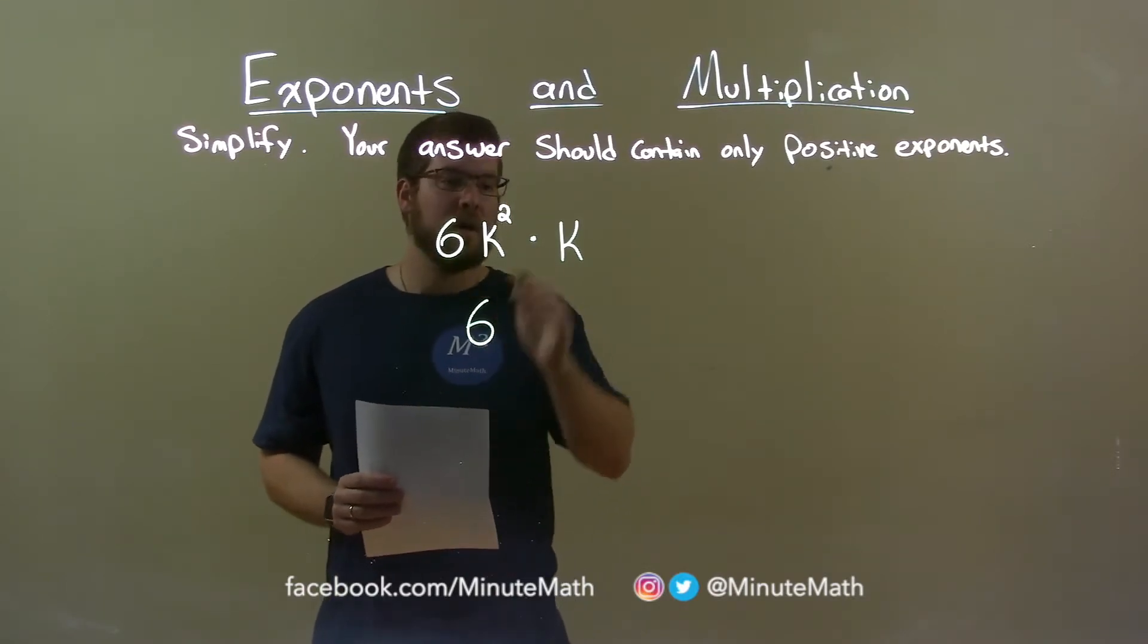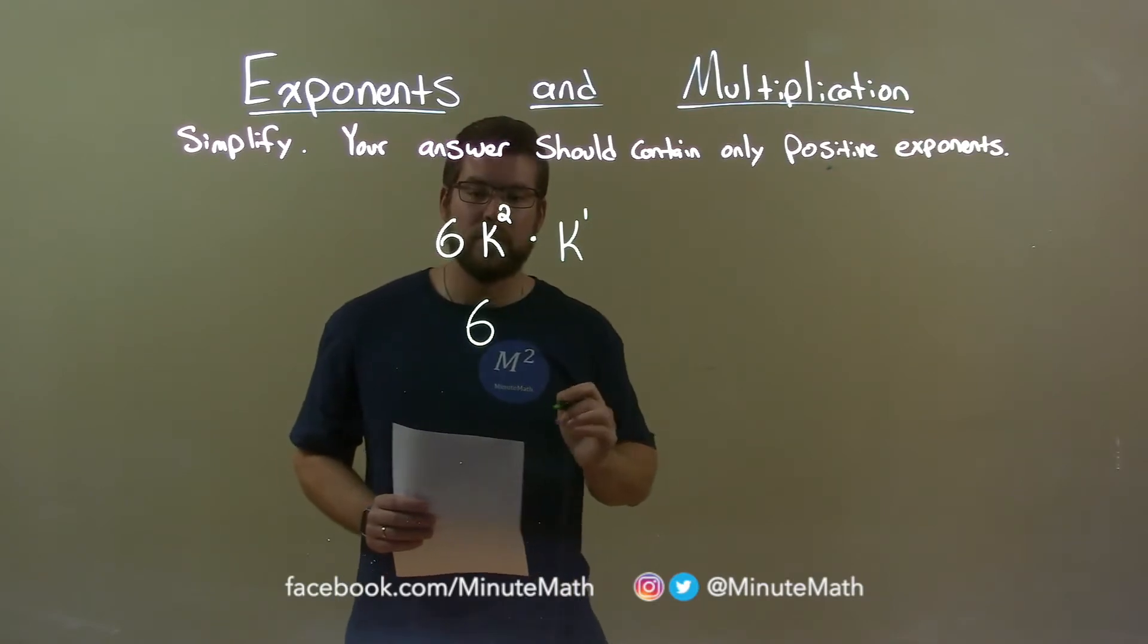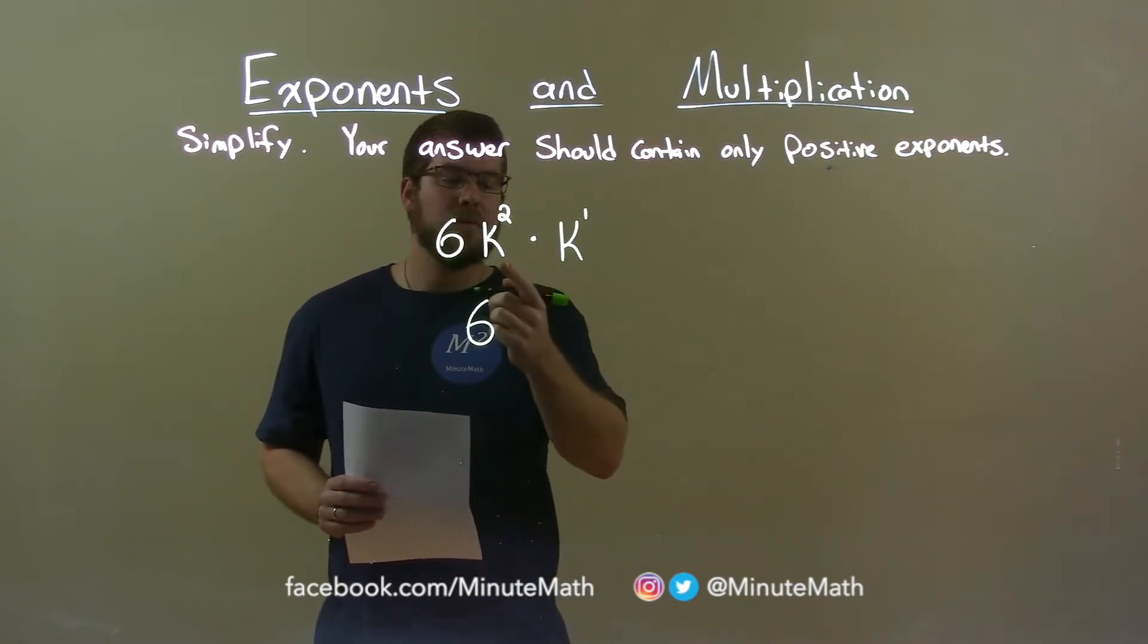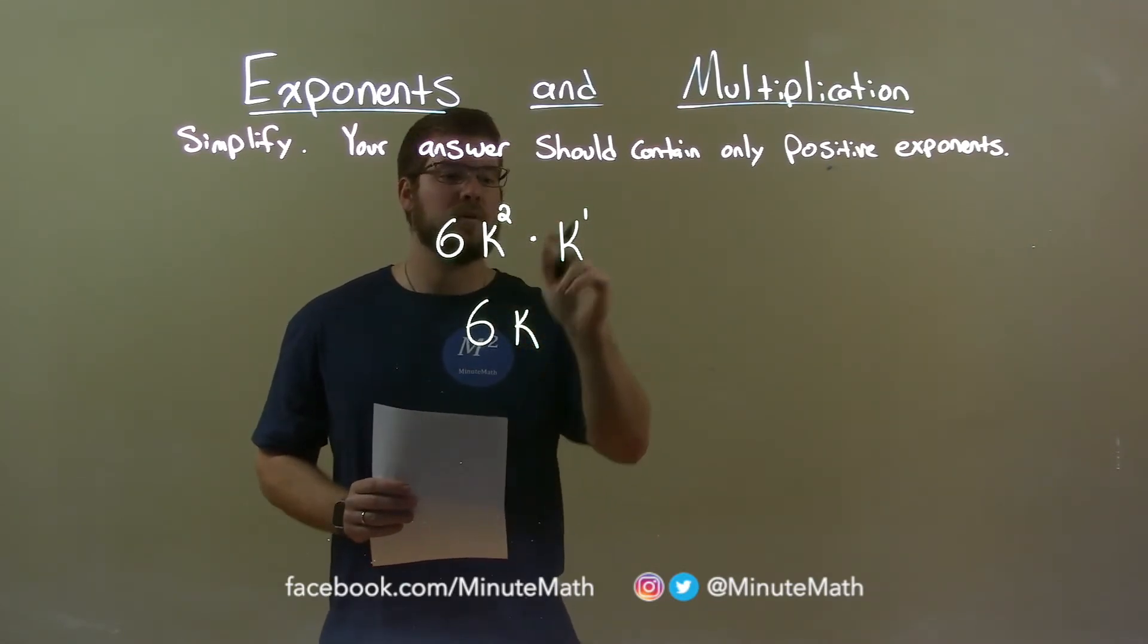Now we look at the variables. Well, k by itself here is really k to the first power. When we multiply variables with the same base here, we keep that base of k, but we can add the exponents. 2 plus 1 is 3.